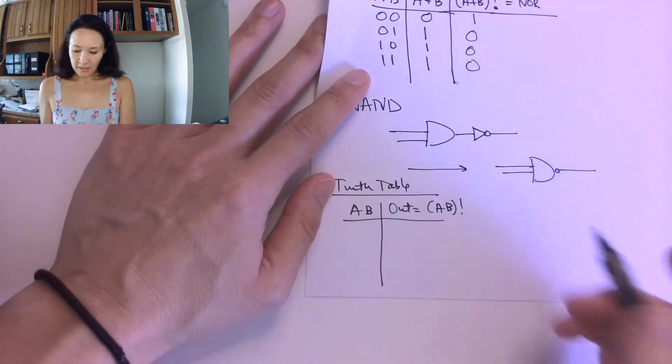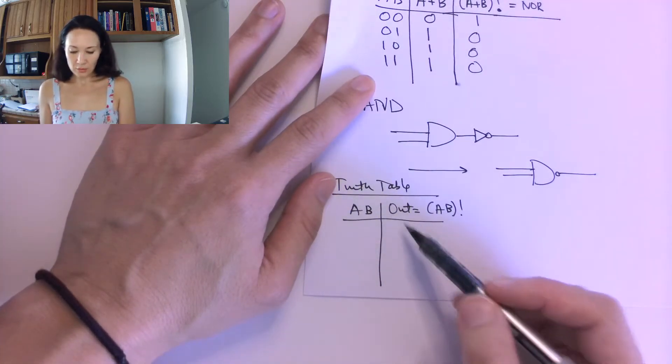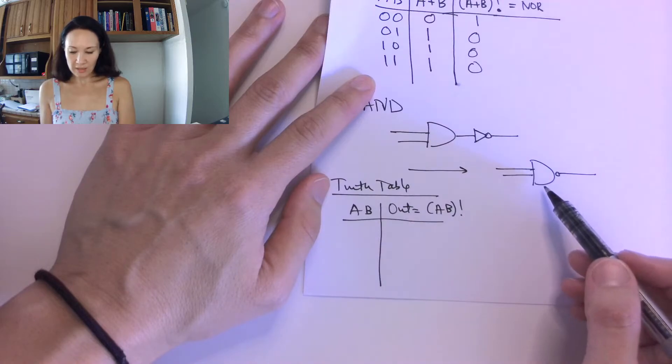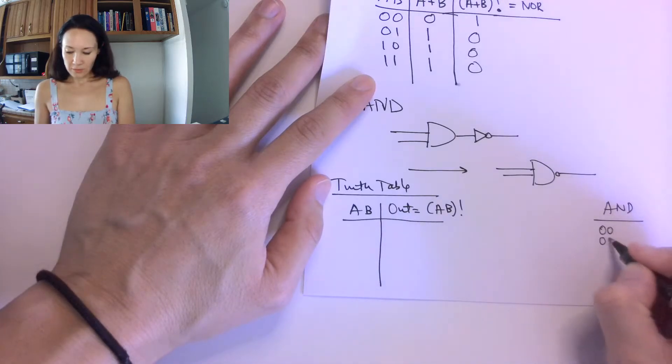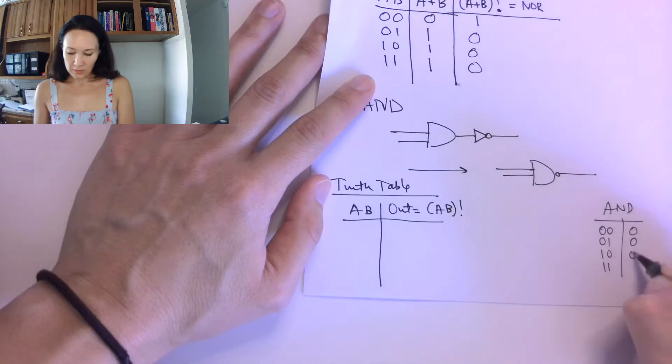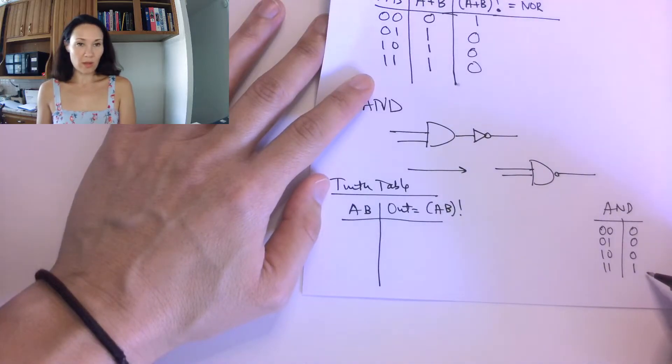It's handy to remember that the truth table for A and B is, the AND truth table for 0, 0, 0, 1, 1, 0, 1, 1 was 0, 0, 0, 1. It's only 1 if both of the inputs are 1.